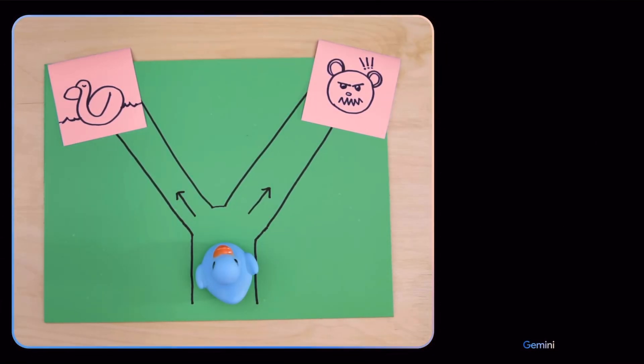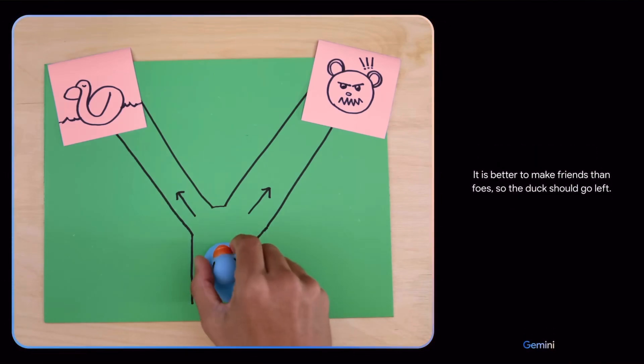Which way should the duck go? Going left leads to a duck, which is a friend. Going right leads to a bear, which is a foe. It is better to make friends than foes. So the duck should go left. Smart choice.